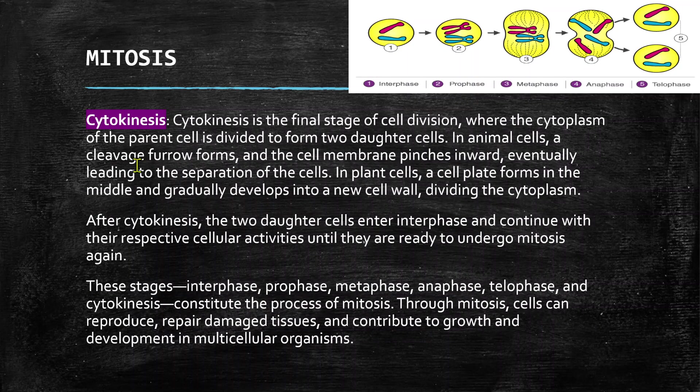Finally, we have cytokinesis. Cytokinesis is the final stage of cell division, where the cytoplasm of the parent cell is divided to form two daughter cells. In animal cells, a cleavage furrow forms and the cell membrane pinches inward, eventually leading to the separation of the cells.